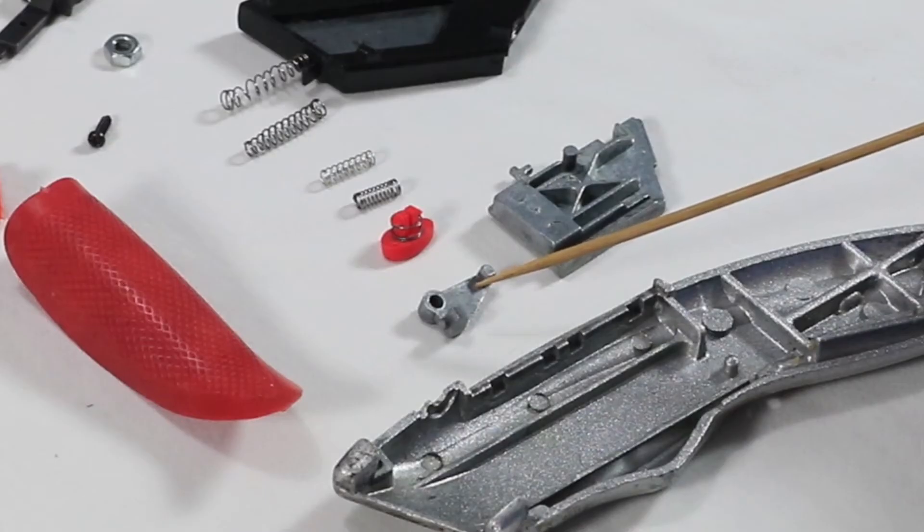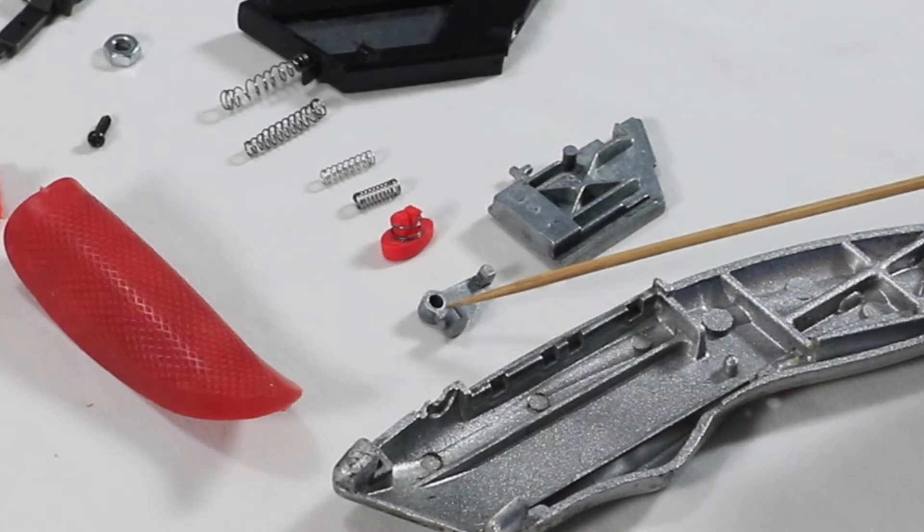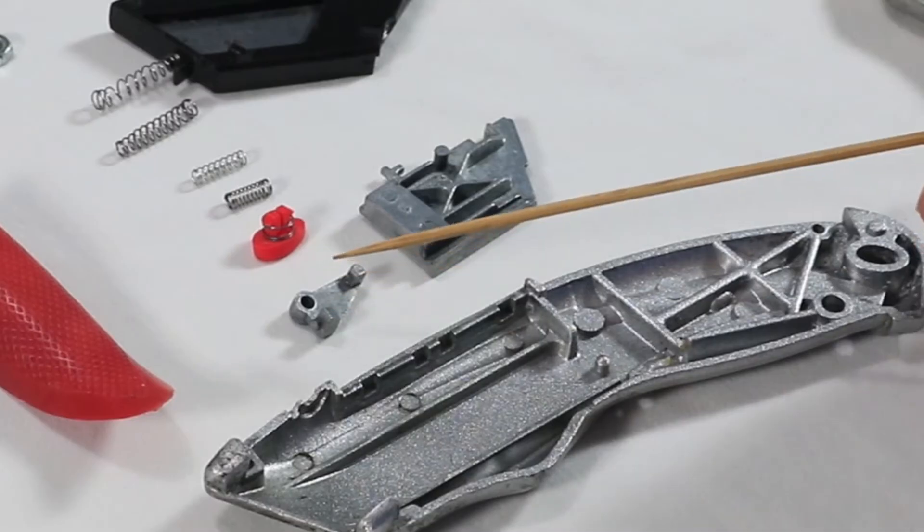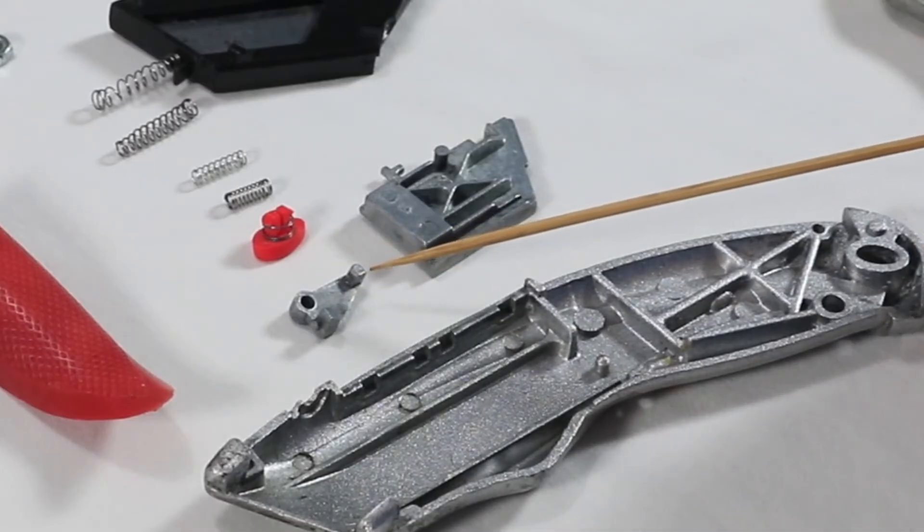Let's name this the blade lock latch. It has a hole that fits the shaft on the blade carrier. Aha! A spring support and a curved thingamabob.